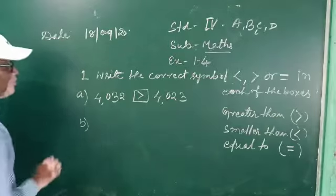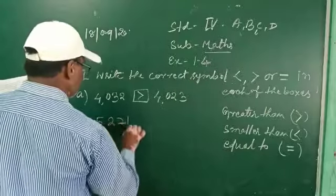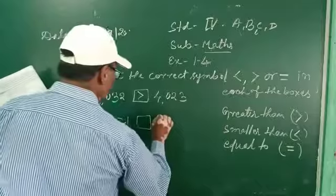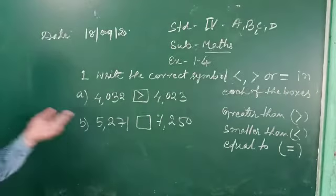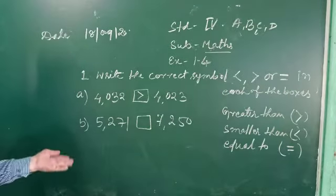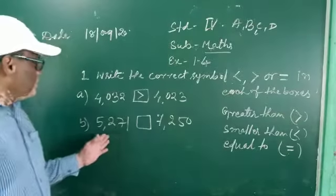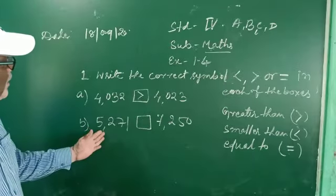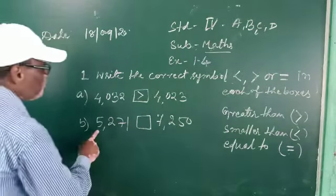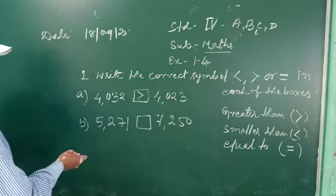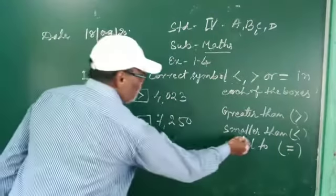Number B — look at number B. Here again, the first number is 5271 and the second number is 7250. In this portion, two numbers are given. Which is the greater number? The first number is smaller and the second is greater. So the first number is smaller than the second number. You can put the smaller than sign, like this.